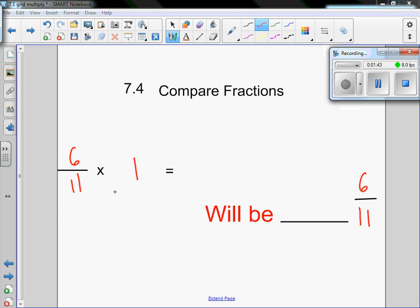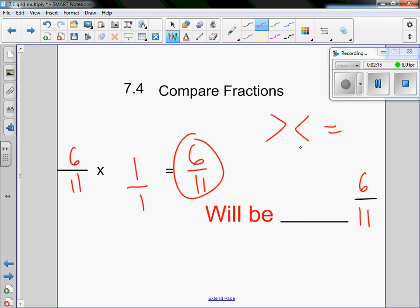All right, this next one is very easy. You have 6/11 times 1 will be blank 6/11. Once again, in the blank we're looking for greater than, less than, or equal to. Anything times 1 equals itself. So this one's pretty easy to say 6/11 times 1 is going to be 6/11. If you want to, you can put a 1 under it, multiply straight across, you get the same answer. It just takes you a little longer. So what it's wondering is 6/11 will be greater than, less than, or equal to 6/11. Well, they're the exact same. That means they're equal.